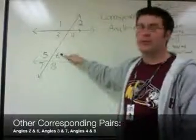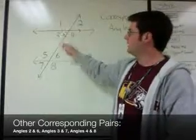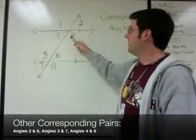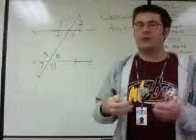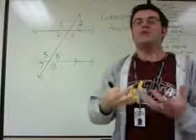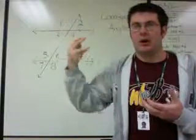Angles two and six are another corresponding pair. Angles three and seven are another corresponding pair. And angles four and eight are also a corresponding pair. These are angles that are all in the same positions in relation to where they are in this picture.